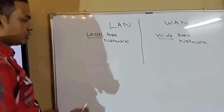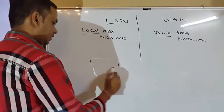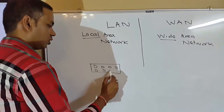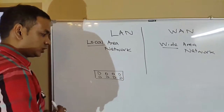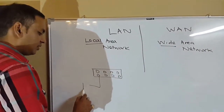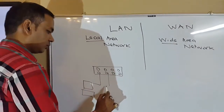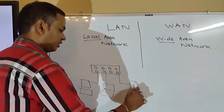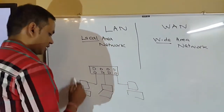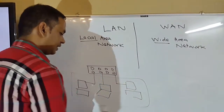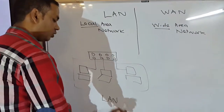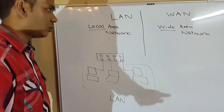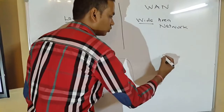A local area network is basically a network on a small geographical location. For example, you have a switch, and from that switch you have different computers. That small network forms what we call a LAN, a local area network.